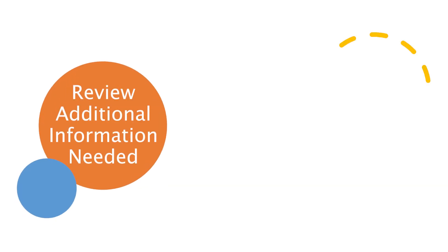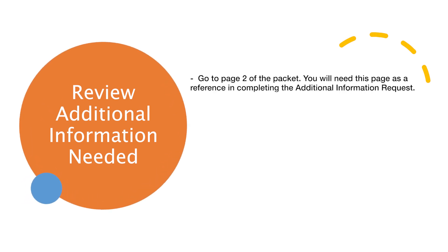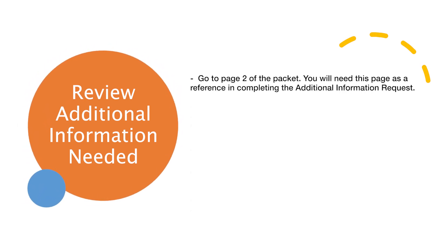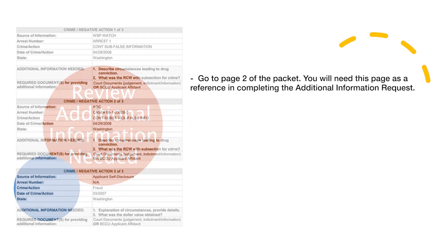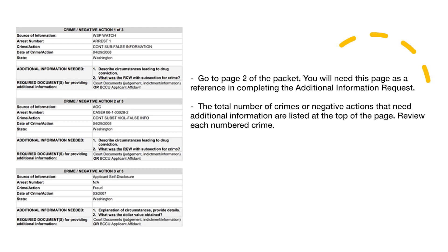Review the additional information needed section. Go to page 2 of the packet — you will need this page as a reference in completing the additional information request. The total number of crimes or negative actions that need additional information are listed at the top of the page. Review each numbered crime.